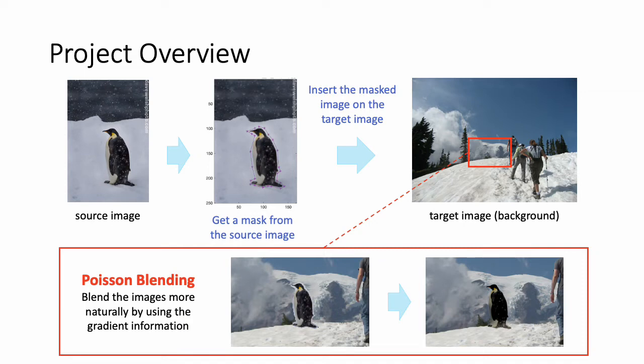This is a project overview. Given a source image and a target image, our goal is to seamlessly blend them into one natural image. First, get a mask from the source image — which part we want to attach to the target image. Second, select a location where the masked image will be attached. The Poisson blending technique is then used to blend the images more naturally.